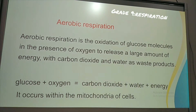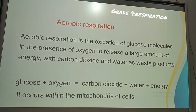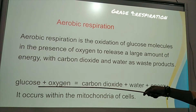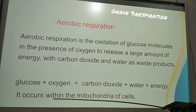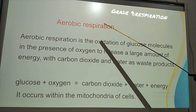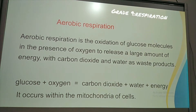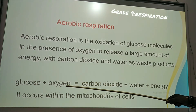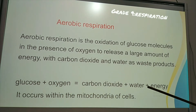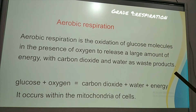Oxygen is required, and aerobic respiration releases a large amount of energy. When we have aerobic respiration, we have a large amount of energy, and CO2 and water are the waste products. So: glucose plus oxygen gives CO2 plus water plus energy. This explains aerobic respiration. Glucose is broken down in the presence of oxygen to give CO2, water, and energy. Aerobic respiration occurs in the mitochondria of cells.